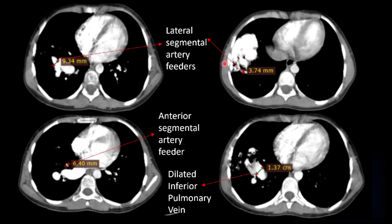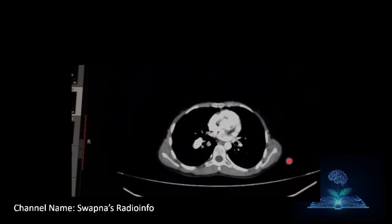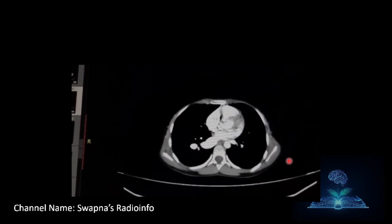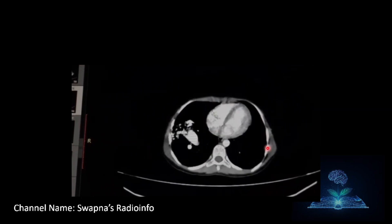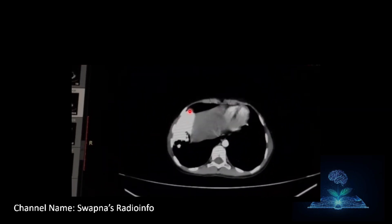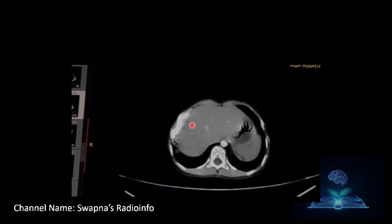The lateral segmental artery measures 9.3 mm; another arterial feeder measures 3.7 mm, and the anterior segmental arterial feeder measures 6.4 mm. There is a dilated tortuous inferior pulmonary vein measuring approximately 13 mm. The CT pulmonary angiogram video clearly shows this intensely enhancing vascular lesion in a subpleural location in the right lower lobe.